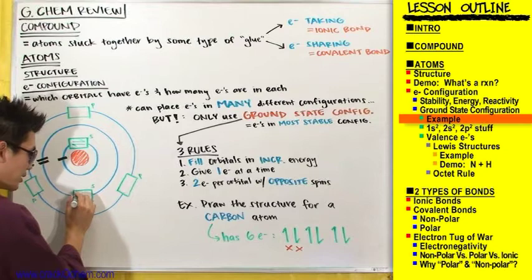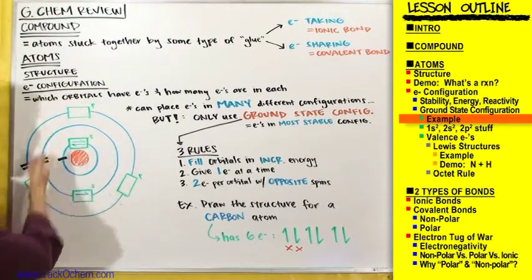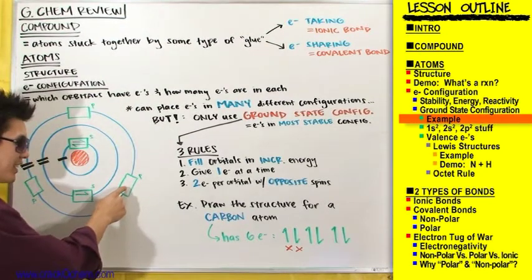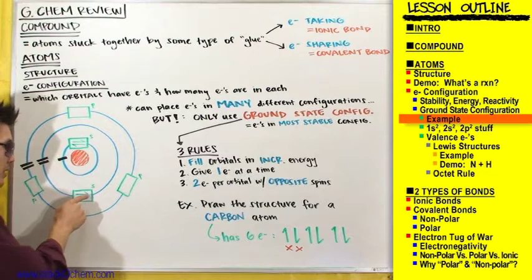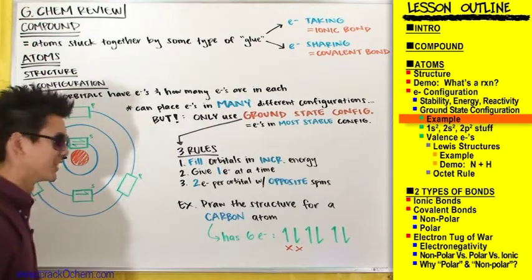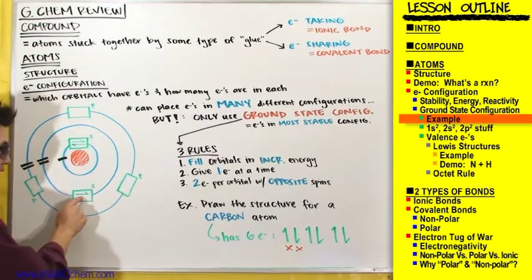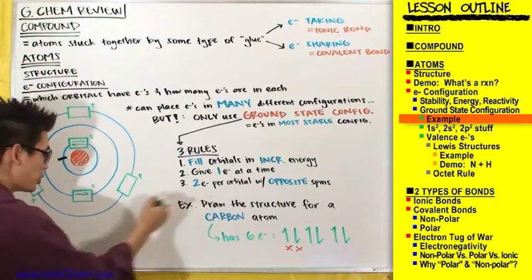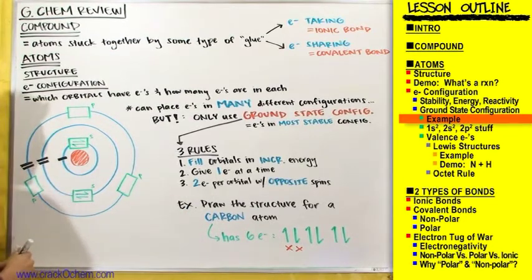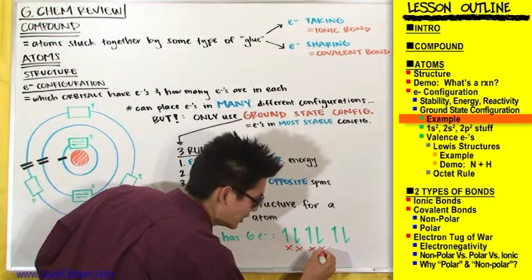Let's give the next orbital one electron. Is there any other orbital we can give an electron to at this point? No — the others are higher in energy, so we need to fill this orbital first before moving on. We give this orbital a second electron with opposite spin, using up two more electrons.